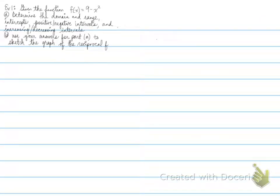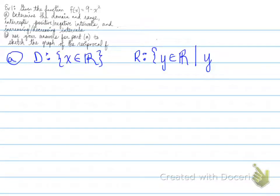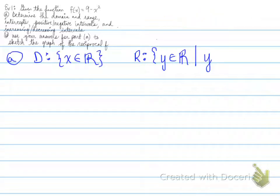Let's answer part A. The first thing we want is the domain. The domain of any parabola is x belongs to all real numbers. The range: we need to determine the vertex. Rewriting 9 minus x squared as negative x squared plus 9, the vertex is at (0, 9) and it opens down. So the range is y less than or equal to 9.